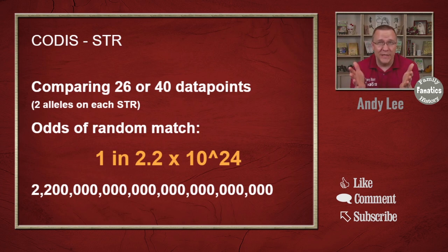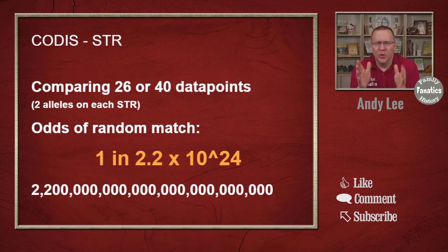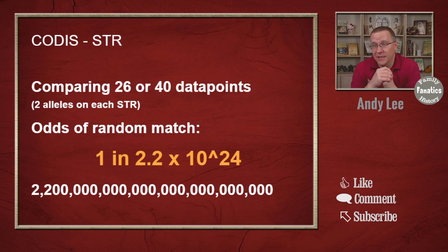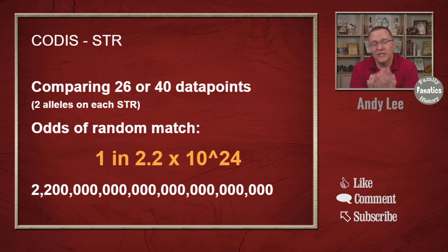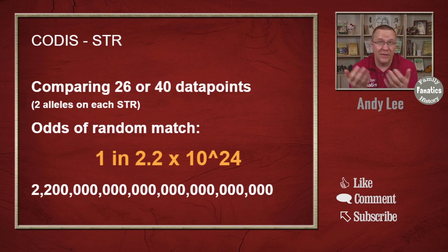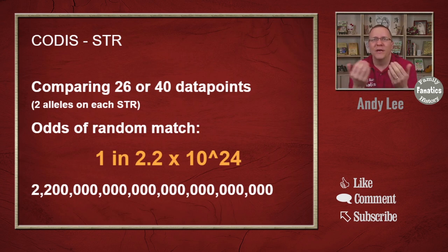There are exceptions to that — identical twins. Identical twins are the exception to lots of things. But if you don't have an identical twin, you are not going to match somebody randomly just based off of these CODIS STRs. And that's why it is a useful tool for law enforcement — if they have a sample from a crime scene and a suspect they can get a sample from and compare the two, and if they match, there is almost no chance that it is a random match. It is very definitive, and that's why the courts have been able to use this for about the last 30 years as very definitive evidence — not only to convict people but also to exonerate people.